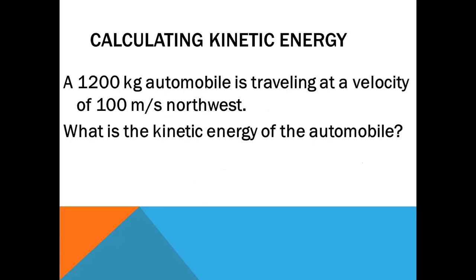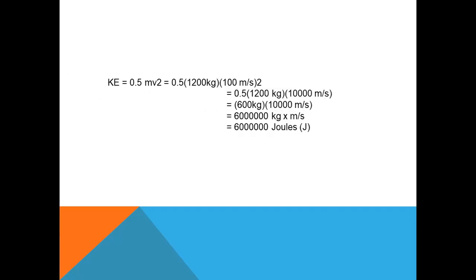Let's try this. For this example, we have a 1,200-kilogram automobile traveling at a velocity of 100 meters per second northwest. What is the kinetic energy? KE equals 0.5 mv squared. We have 1,200 kilograms and velocity of 100 meters per second, so we do the multiplication and arrive at 6,000,000 kilograms·meters squared per second squared.